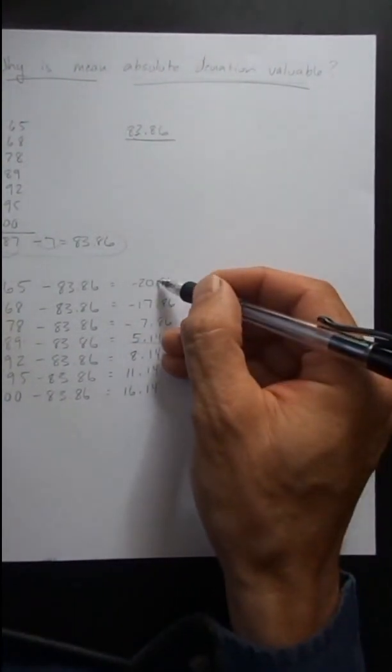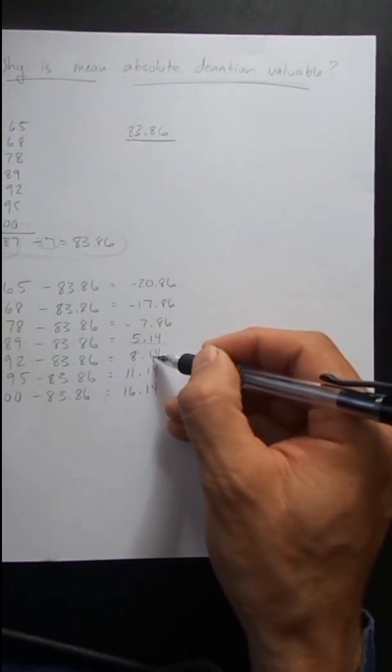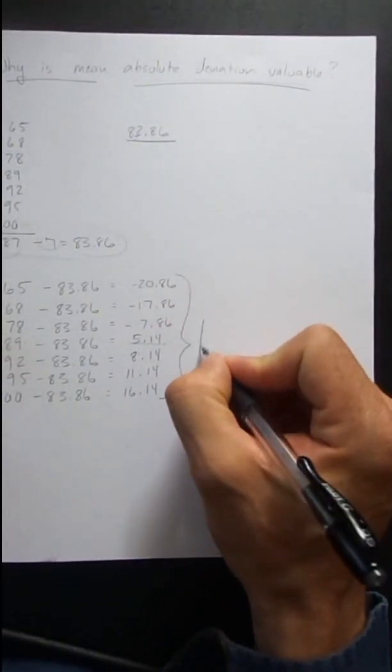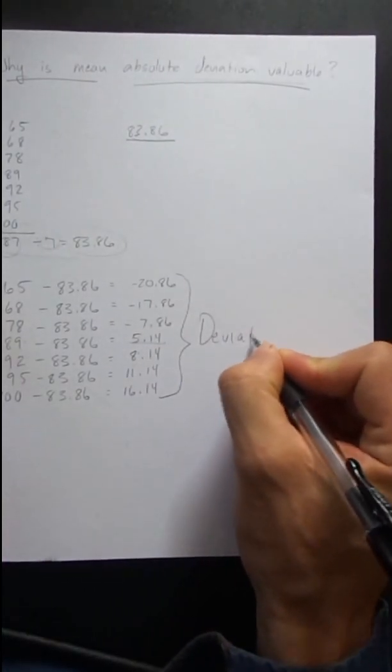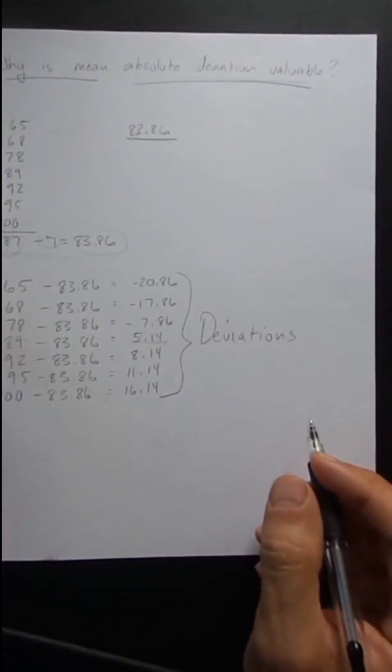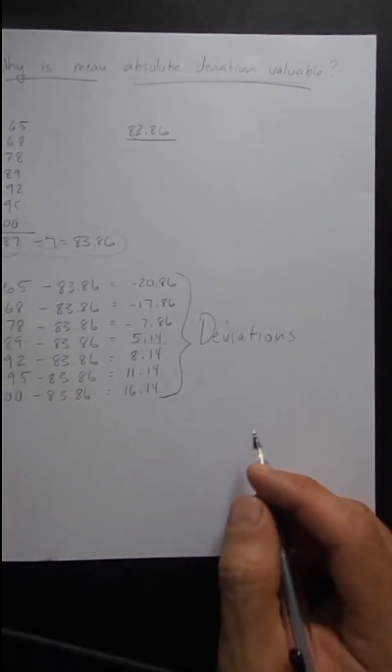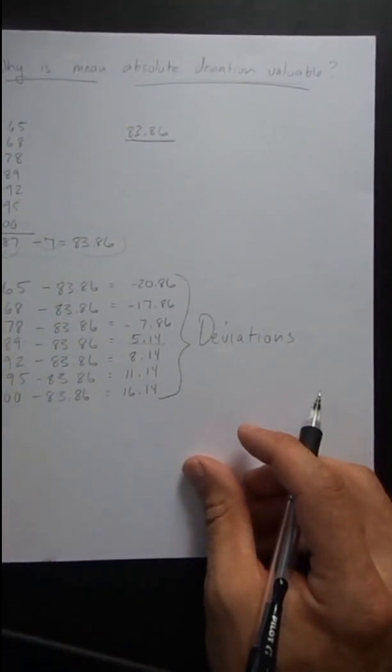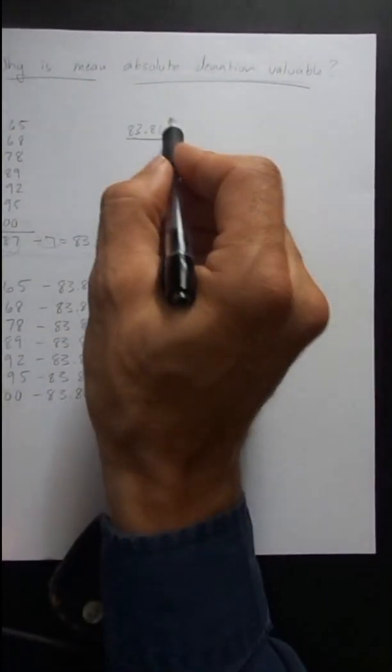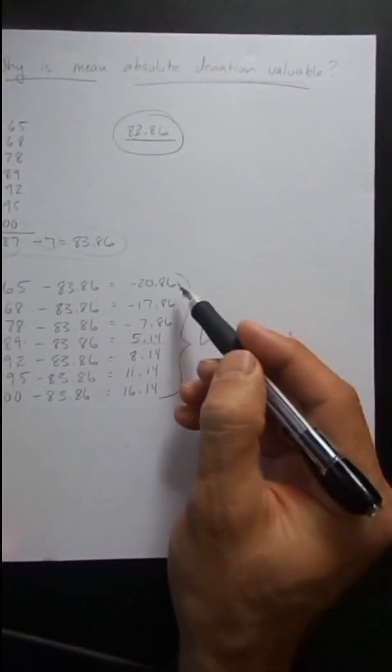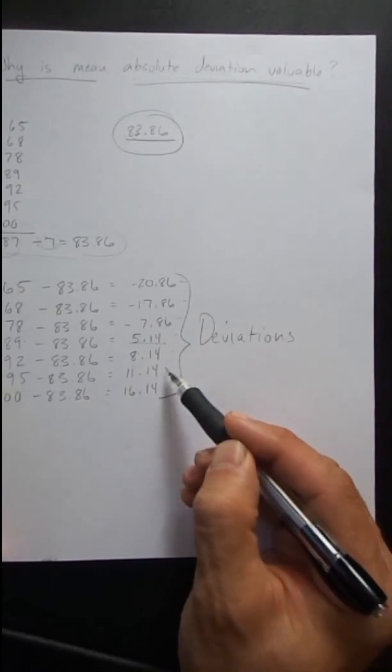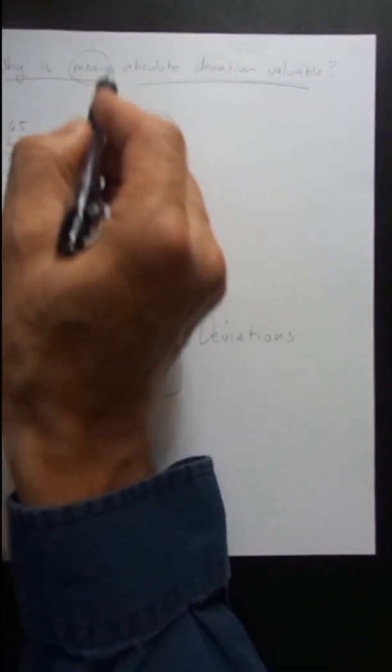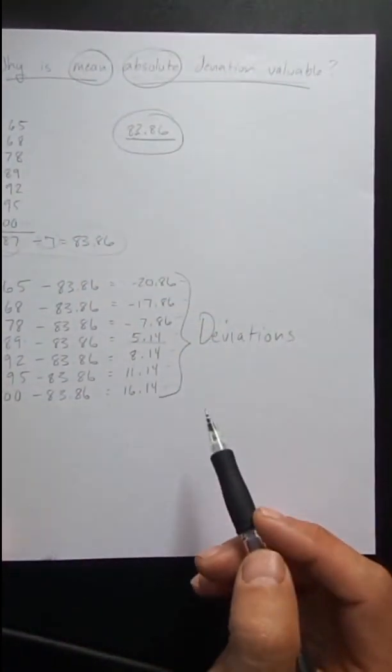So we have here all of our deviations, and I'm going to label this right here 'deviations.' When somebody calls you a deviant, that means you're different than the norm. They say you deviate, you're deviating from the norm. Well this is our norm, this is our average, and these are the deviations from the average, meaning how far away they are from the average.